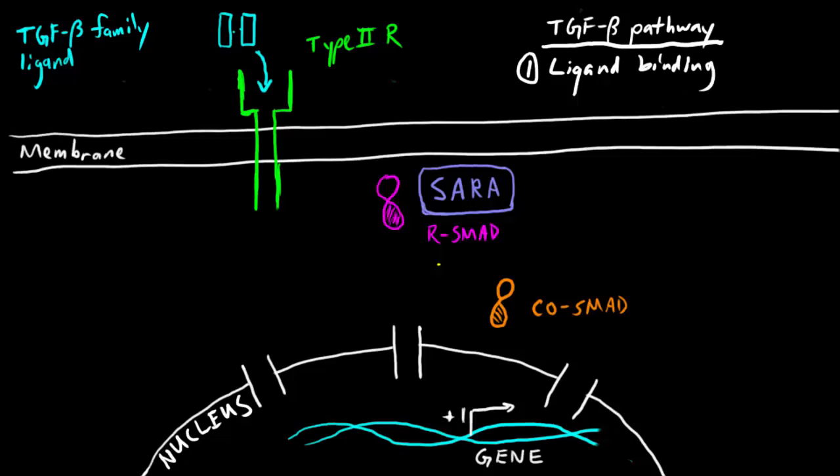Now the TGF beta family ligands like to dimerize together and what they're going to do is they're going to bind to a type 2 receptor. This binding event brings together the type 2 receptor with the type 1 receptor. The type 2 receptor is what we called constitutively active and it's always on, but the reason why it can't phosphorylate and activate the type 1 receptors is because it's just not close enough. It's not in the right orientation.